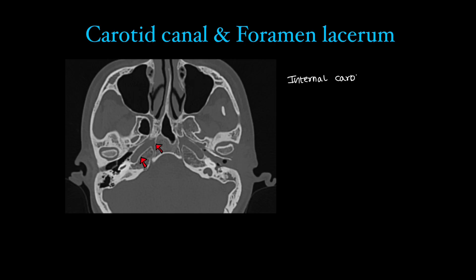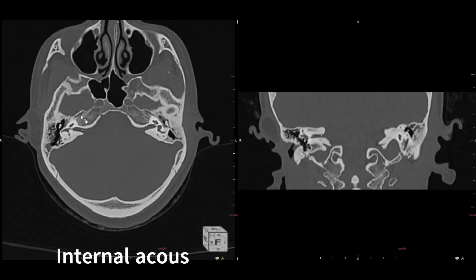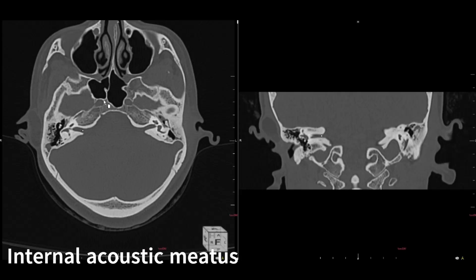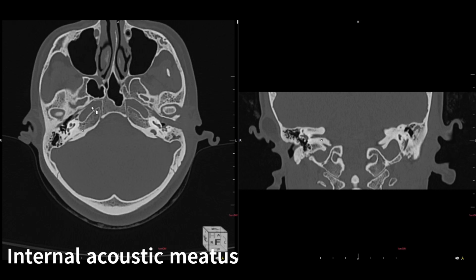Contents of the carotid canal: the internal carotid artery, obviously, and the sympathetic plexus along the internal carotid artery also passes through this canal.